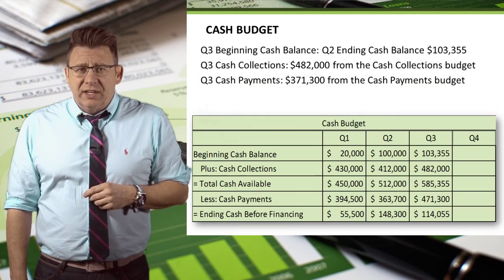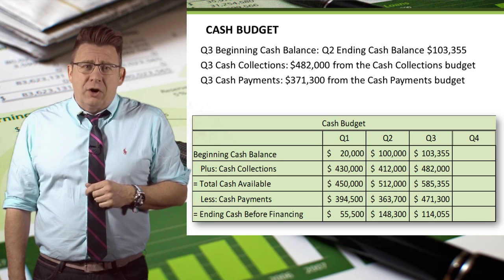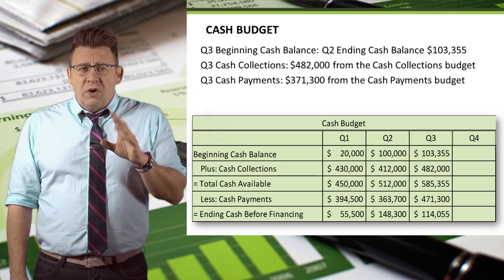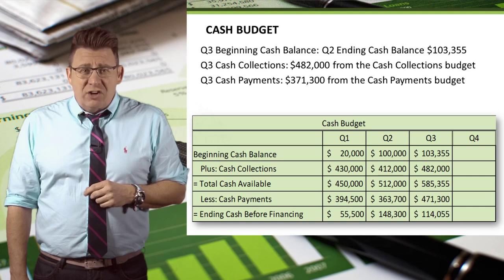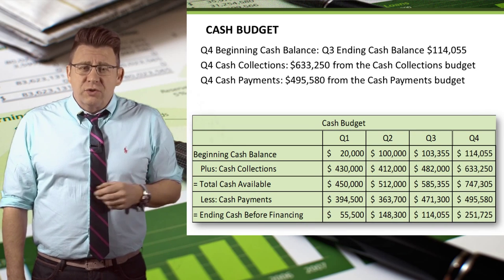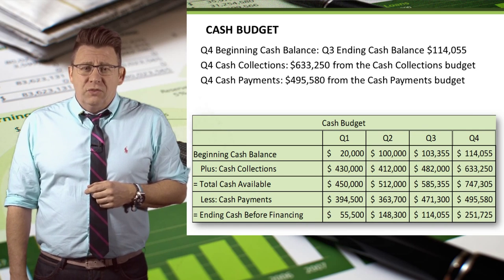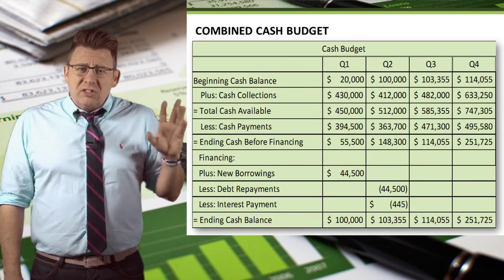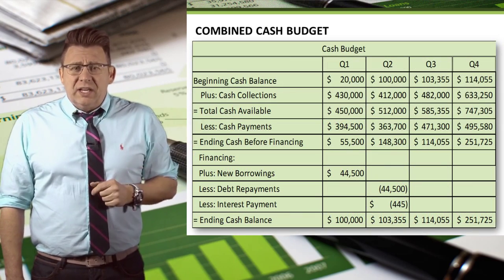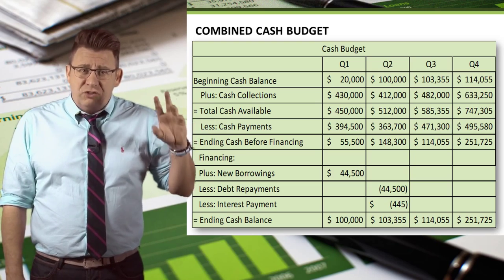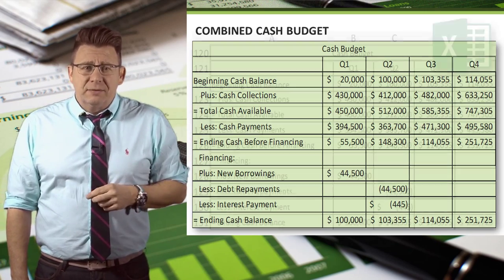Q3 is calculated the same as the prior quarters. Since we have budgeted more than $100,000 of ending cash, we don't need to borrow any. Q4 is also calculated the same as the prior quarters. Here's our completed combined cash budget, which shows our cash collections, our payments, and financing.